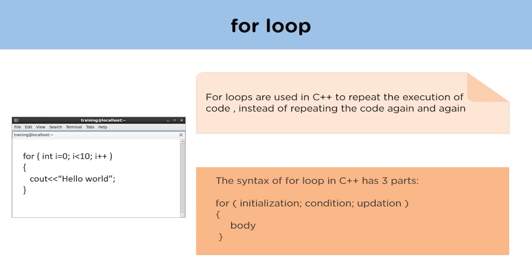For example, inside the loop: i = 0 means we have initialized the loop from 0; i < 10 means the loop will keep repeating until i is less than 10 — that is, it will repeat 10 times in total, from 0 to 9; and i++ denotes that we are incrementing the loop after each iteration by 1.